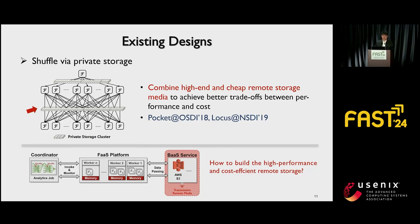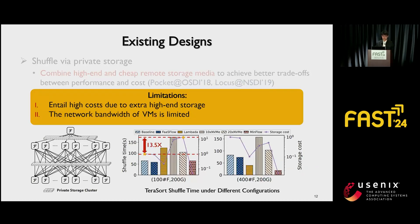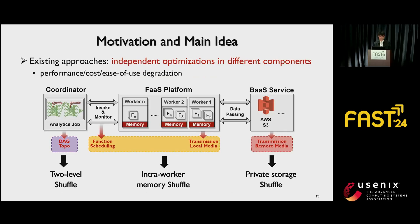Last, shuffle via private storage can use high-end and cheaper remote storage media to achieve better trade-offs between performance and cost. But this approach still entails high costs — on one hand, the high-end storage is expensive; on the other hand, the private storage must be mounted to VMs for access, but network bandwidth is limited, requiring many instances to improve performance. Under a Terasort workload, the storage cost of this approach can be 13.5 times more expensive compared to baseline. In conclusion, existing approaches imply independent optimization in different components, resulting in performance, cost, or usability degradation.